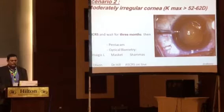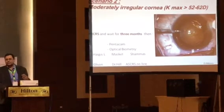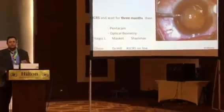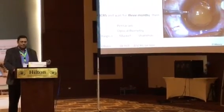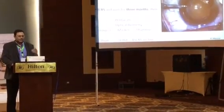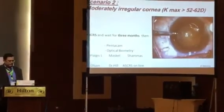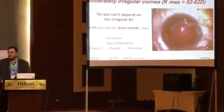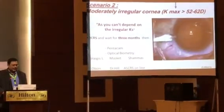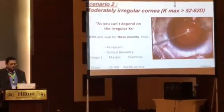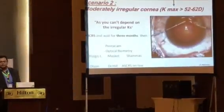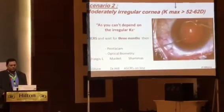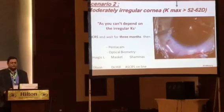Scenario two: patients with moderate irregular cornea, Kmax past 52 diopters up to 62 diopters. You cannot depend on this stable but irregular cornea for IOL calculations. In these cases, we have to regularize the cornea, whether by intracorneal segments or cross-linking. Wait three months after ICRs, then do Pentacam and optical biometry using Haigis-L, Masket, and Shammas formulas. The surgery itself is not different from a regular cataract procedure.